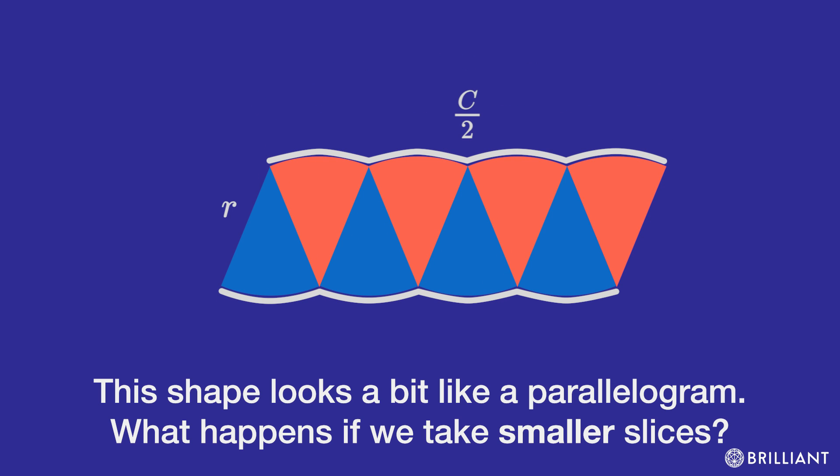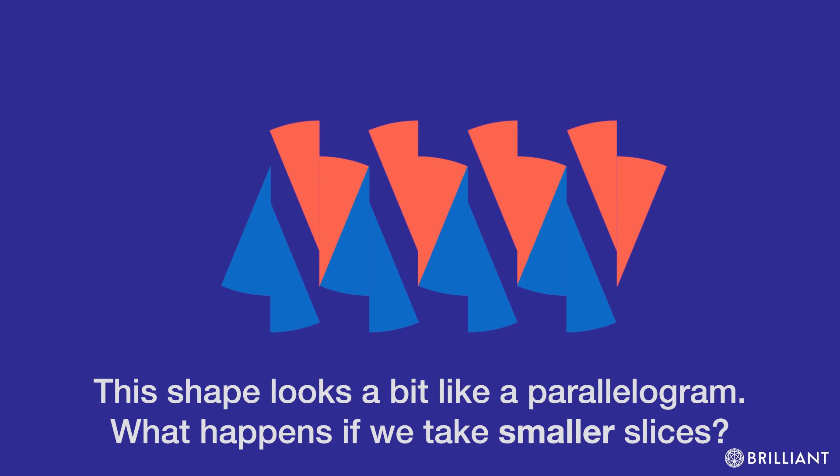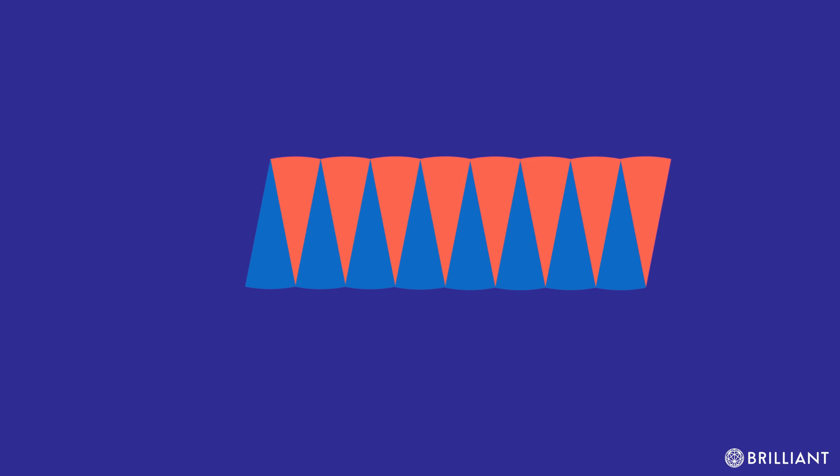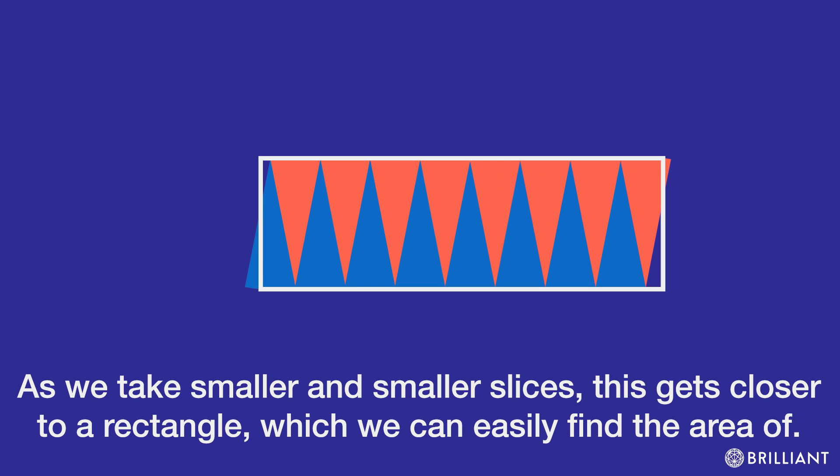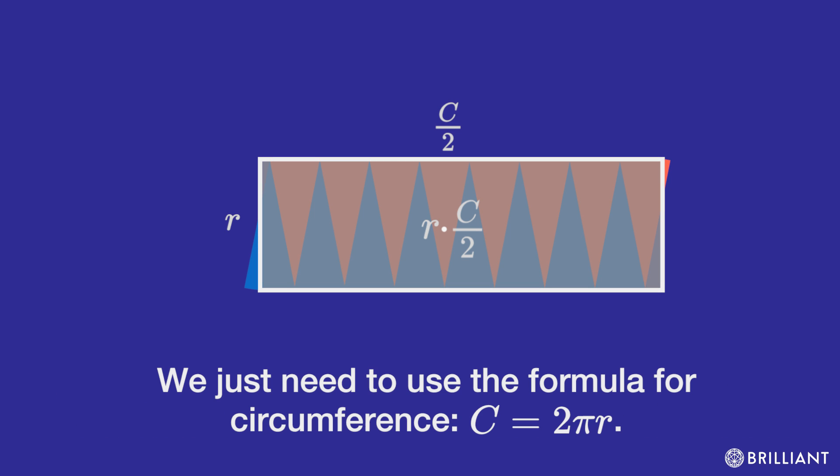The shape looks a bit like a parallelogram. What happens if we take smaller slices? As we take smaller and smaller slices, this gets closer to a rectangle, which we can easily find the area of. We just need to use the formula for circumference, c equals 2 pi r.